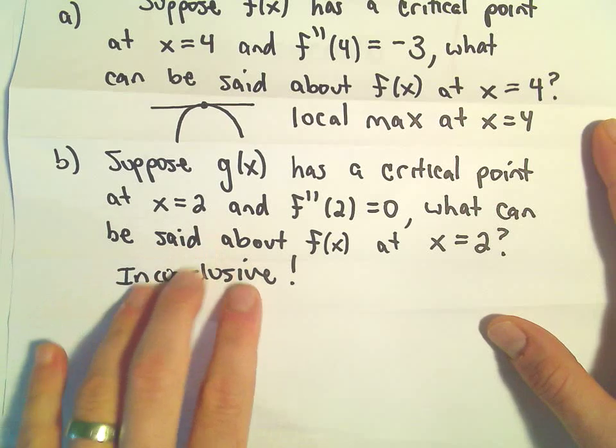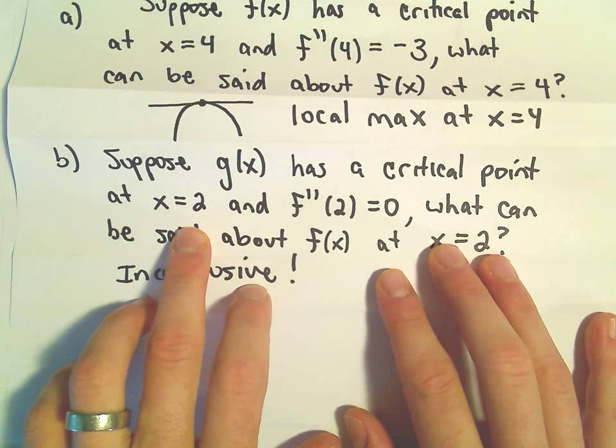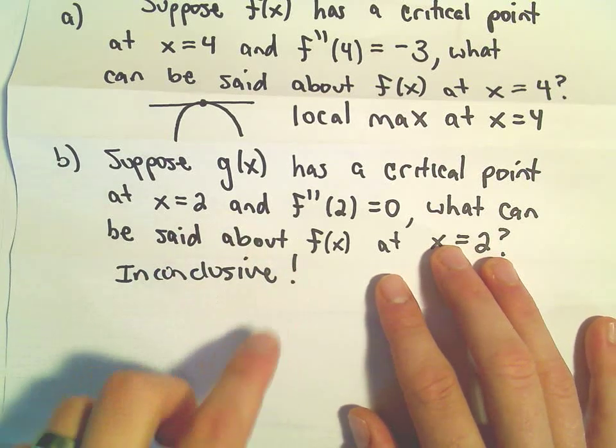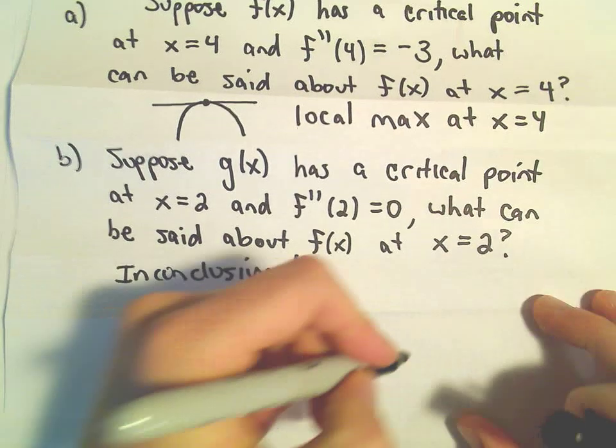So what you could do in this case to figure out if you do potentially have a maximum or minimum is you can go back and use the first derivative test, do the little sign chart.